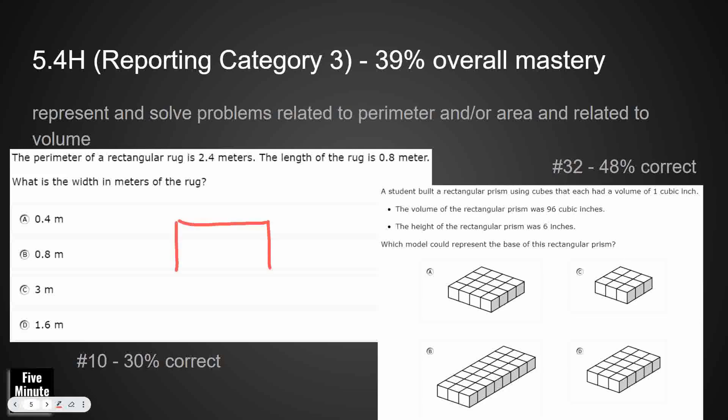So our next one was 5.4H. We had 39% overall mastery. We are looking at perimeter and area as it's related to volume. So this one was a little bit tricky here. We had a perimeter of a rectangular rug, and we had the whole perimeter is 2.4 meters. The length is 0.8. We don't know what the width is. Well, we could have doubled it, so those two together would have been 1.6. So if I take the 1.6 away, that's going to be 0.8 left, but it's not 0.8 because that 0.8 needs to go for both widths. So I need to cut that in half. This is 0.4. And a good strategy would have been to add everything up afterwards. That's 8, 16, 20, 24, 2.4. So our answer there is A.